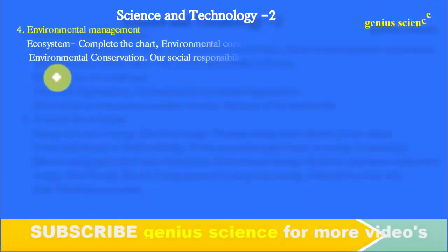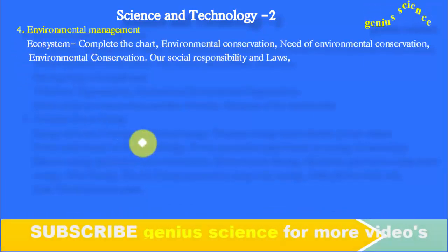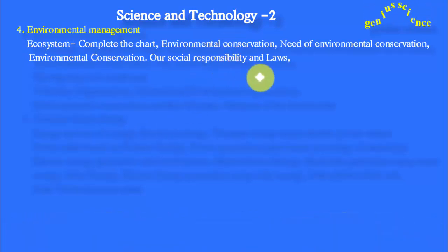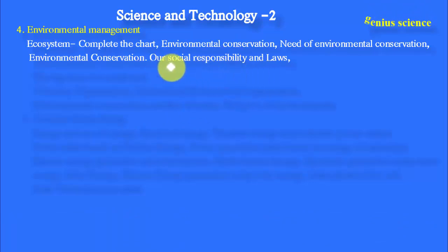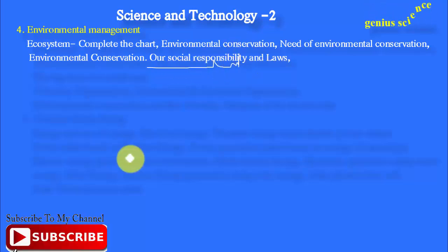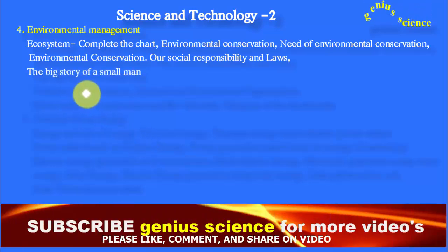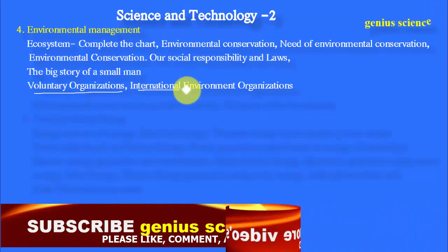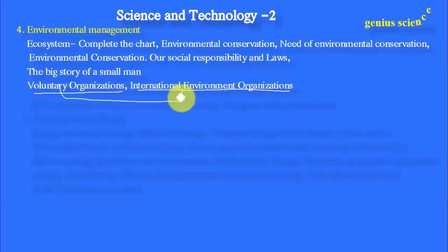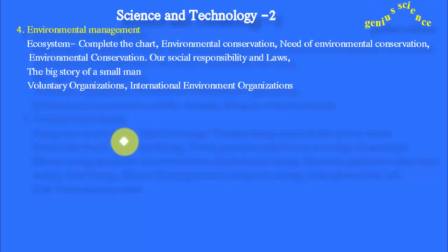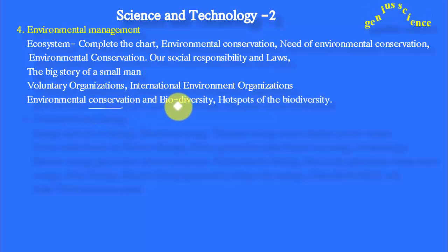Now the fourth chapter is Environmental Management. In this chapter, we must complete the Ecosystem chart. Topics include Environmental Conservation, the Need for Environmental Conservation, our Social Responsibility and Laws, and the story 'The Big Story of a Small Man' from our book, which is also important. Voluntary Organizations and International Environmental Organizations — you must compare these two types in our country and internationally. Also important: Environmental Conservation, Biodiversity, and Hotspots of Biodiversity.